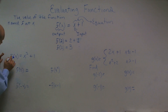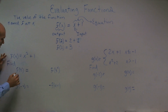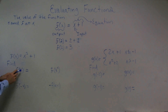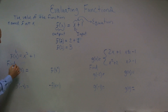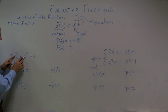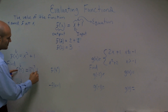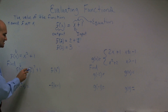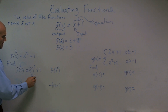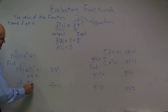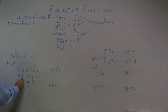On the first one, the value of my function f at x is equal to x squared plus 1. So what I want to do is find the value of my function f at 2. The only thing I'm going to do is instead of using my input value of x, I'm going to plug in 2. So I have 2 squared plus 1. I can simplify this — 2 squared gives me 4 plus 1, which equals 5. So I can write f of 2 equals 5.